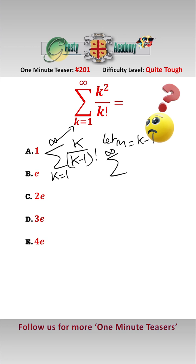then we can replace this to be the sum between m equals 0 and infinity of m plus 1 over m factorial,